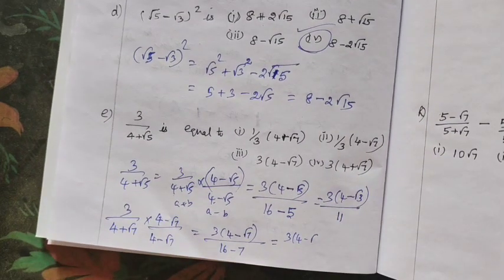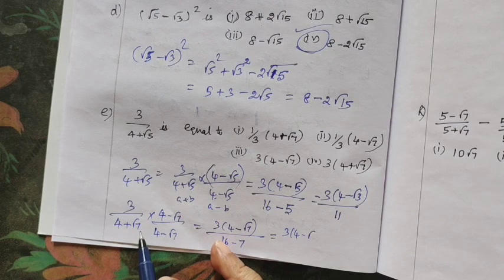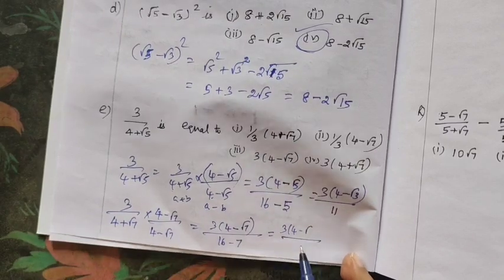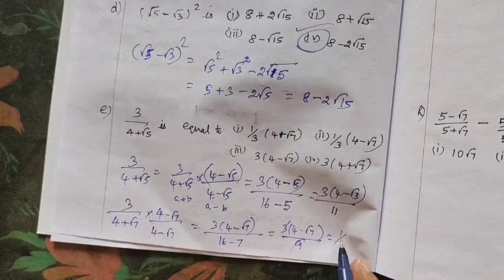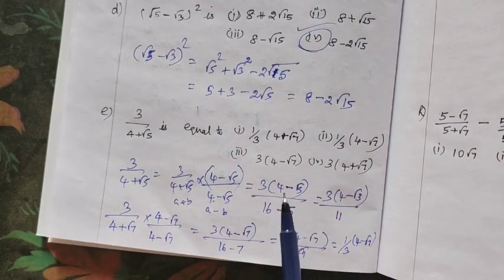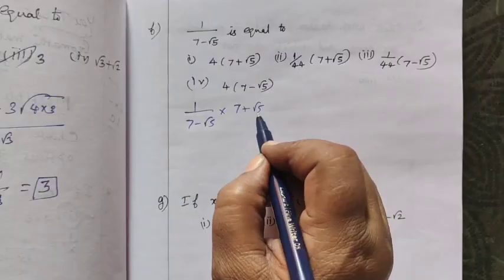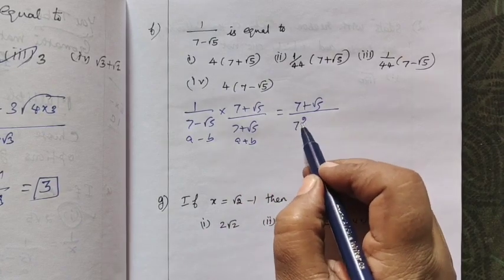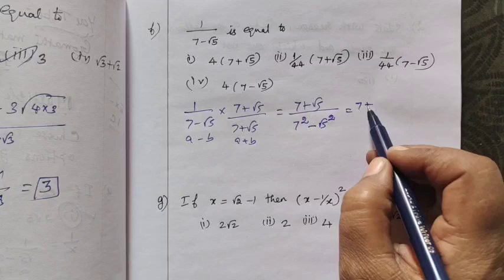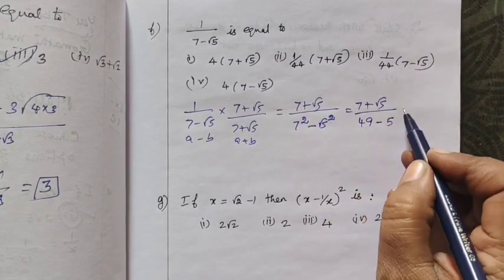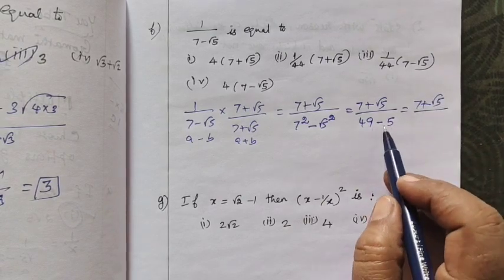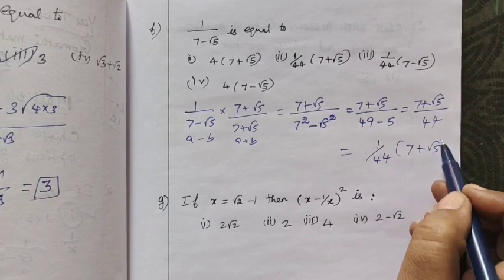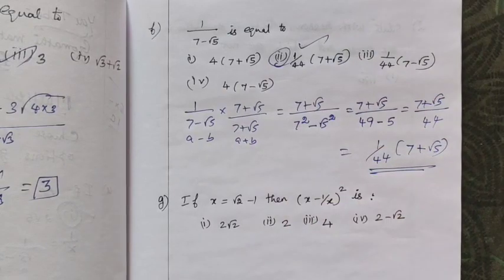I think the question had 4 minus root 7 inside, so the conjugate is 4 plus root 7. Using (a - b)(a + b): 16 minus 7 equals 9. Cancel to get 1 by 3 times (4 minus root 7). Then for the next part with (7 minus root 5), take the conjugate (7 plus root 5): a² - b² gives 49 minus 5 equals 44. So the result is (7 plus root 5) divided by 44. Option 2 is correct.